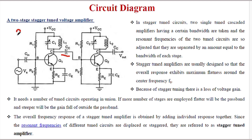This first stage is tuned to resonant frequency FR1, and the second stage is tuned to resonant frequency FR2. The difference between these two is equal to the bandwidth of each stage. Another important point: stagger tuned amplifiers are usually designed so that the overall response exhibits maximum flatness around the center frequency F0.